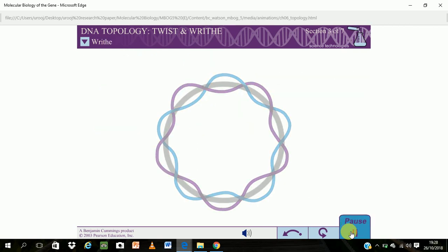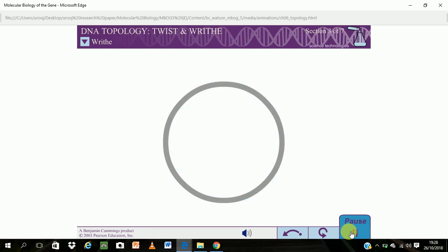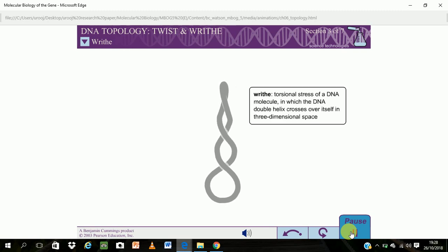However, CCC DNA does not generally lie in a flat plane. Instead, the DNA double helix usually crosses over itself in three-dimensional space, often repeatedly. This torsional distortion is called writhe.